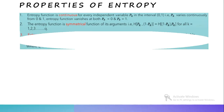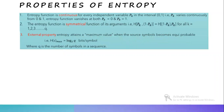The third one is the extremal property. Entropy attains a maximum value when the source symbols become equiprobable. That is, H of S max equals log q to the base 2 bits per symbol, where q is the number of symbols in a sequence. This is the extremal property.